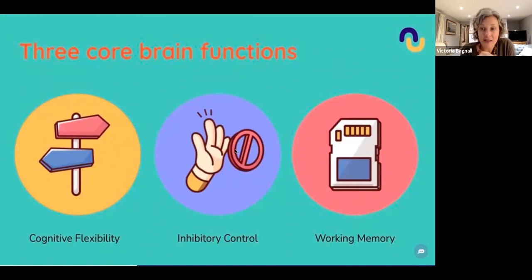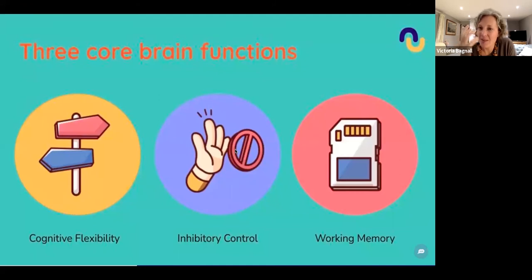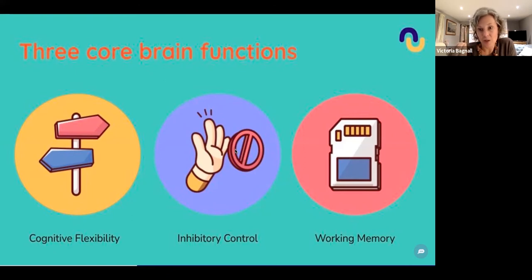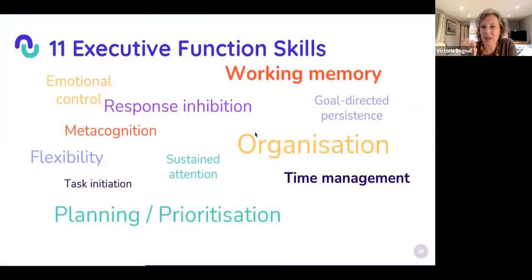I want to talk about the difference between executive functions and executive function skills. There's a lot of research and discourse within academia about executive functioning, and the general agreement is that there are three core brain functions within the prefrontal cortex: cognitive flexibility — our ability to shift our thinking from one way to another; inhibitory control — our ability to not do something we know we shouldn't do; and working memory — our ability to hold information in our head.